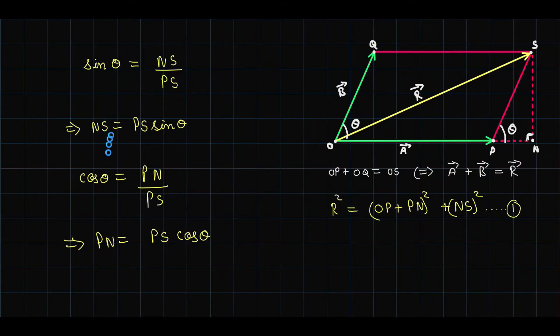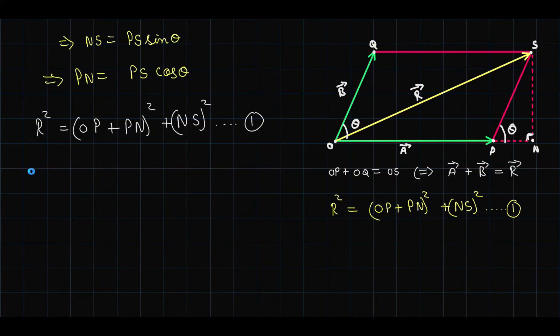Now we substitute both of these values in the first equation over here. This is our equation number 1. R squared equals OP plus PN from this equation is PS cos theta whole squared, and NS from this equation is PS sine theta.